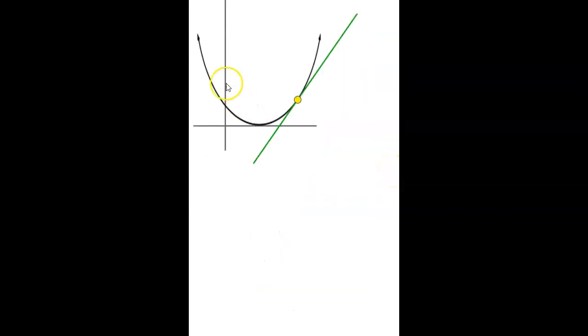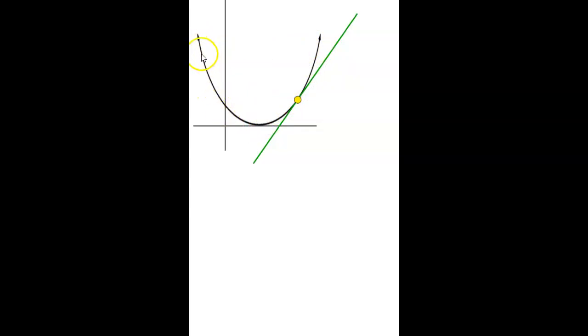Let's take a look at this. Let's say this parabola is the position graph, and we can see that the velocity — which is the slope of the position graph — is always changing. Over here, the slope of the position graph is negative. Right here at the bottom, it's zero. Over here, it's something else.